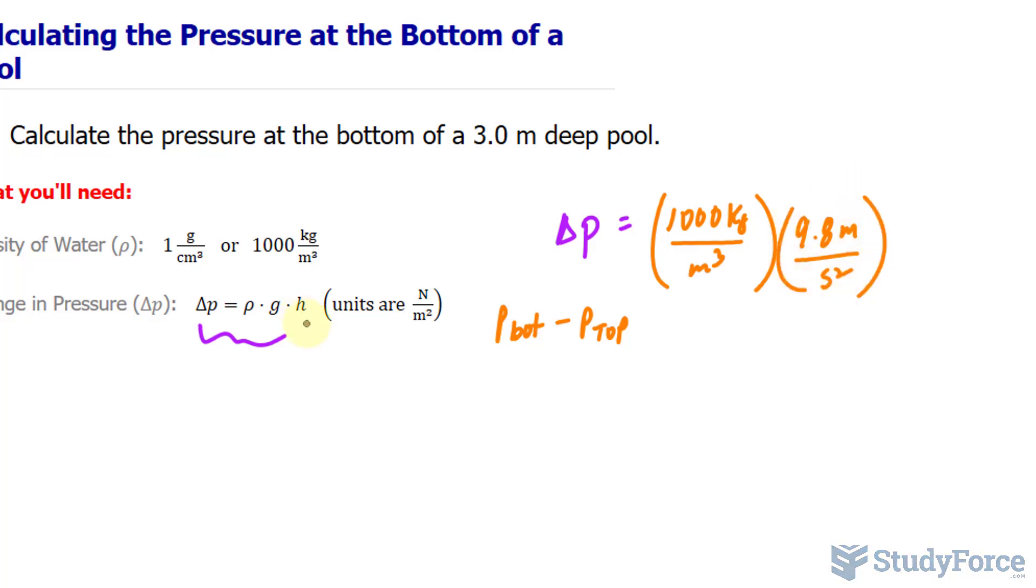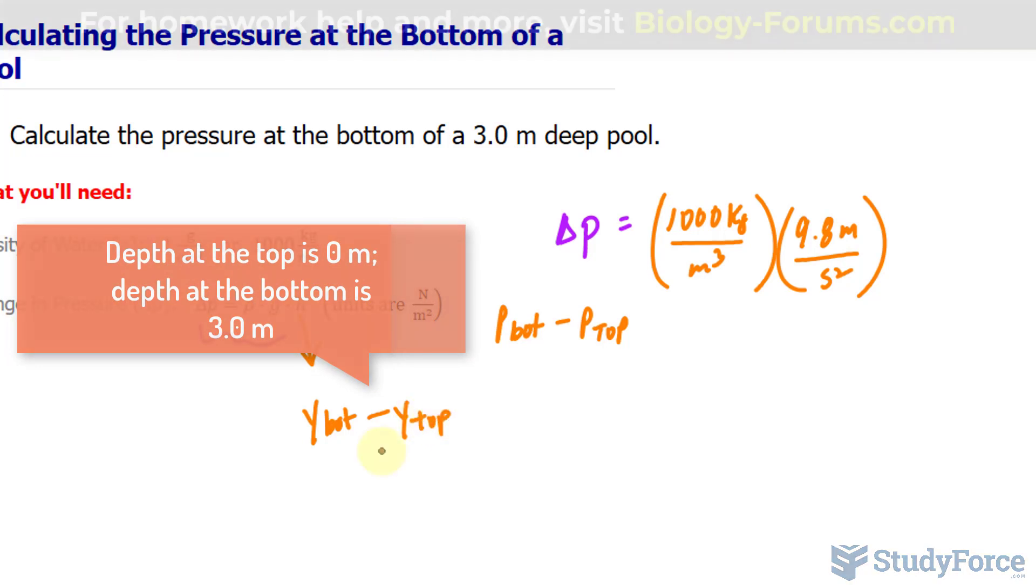And we multiply that to the height, which is the same thing as saying the depth of the pool at the bottom minus the depth of the pool. And I'm representing depth using the letter Y at the top.